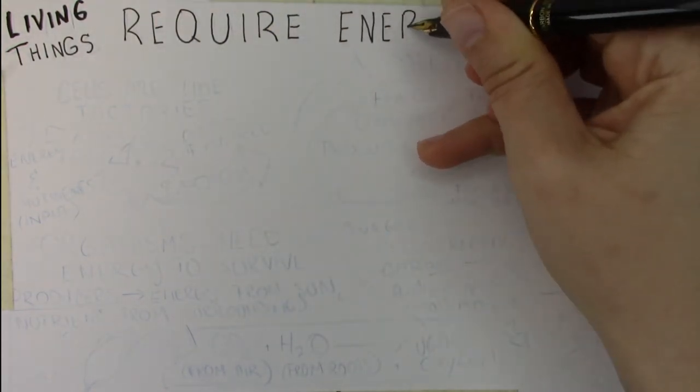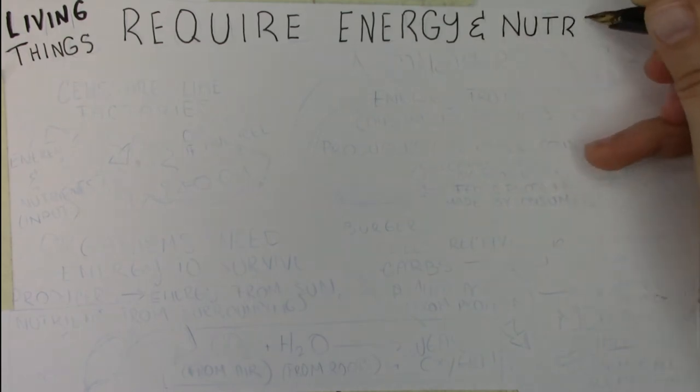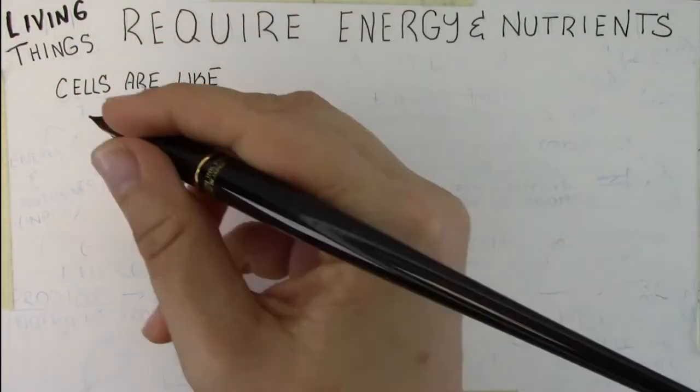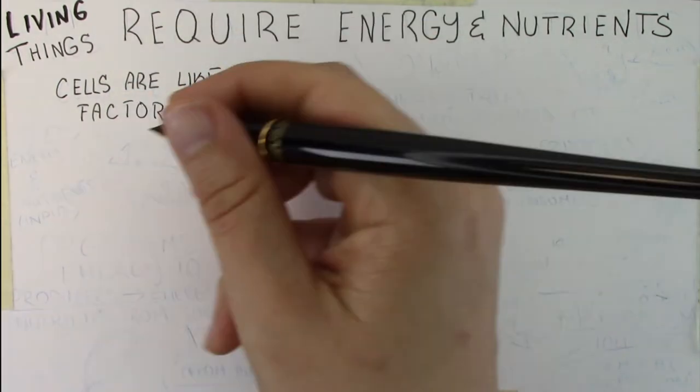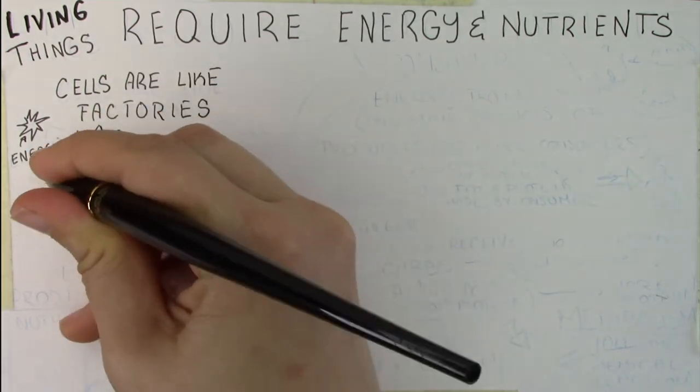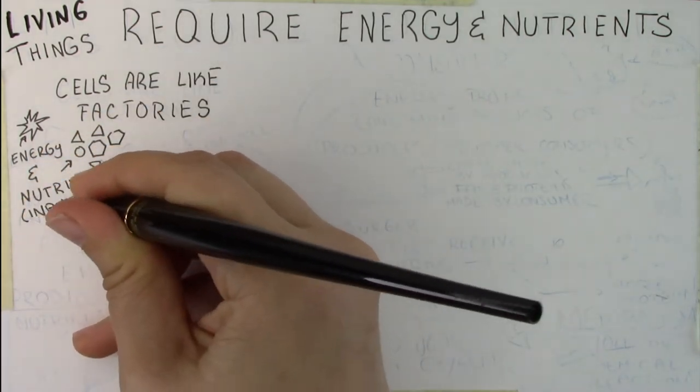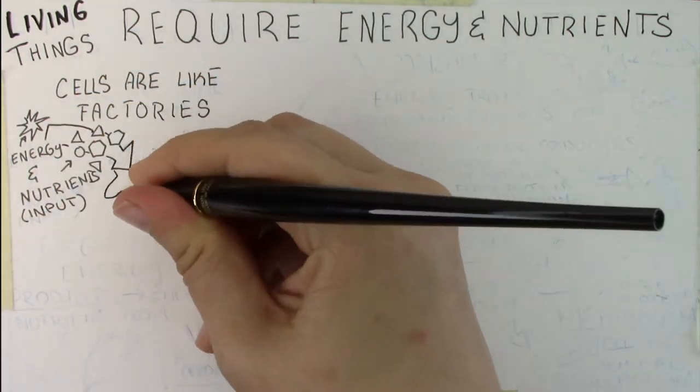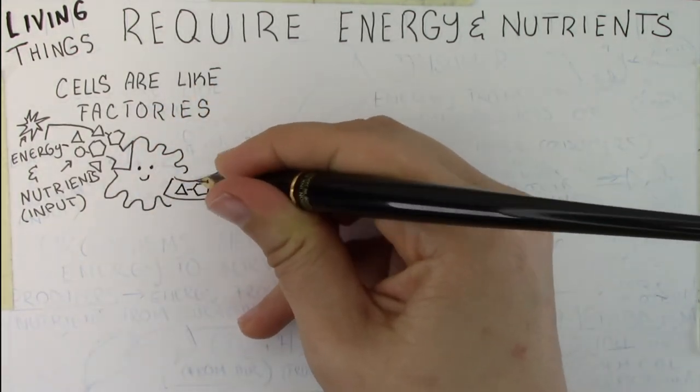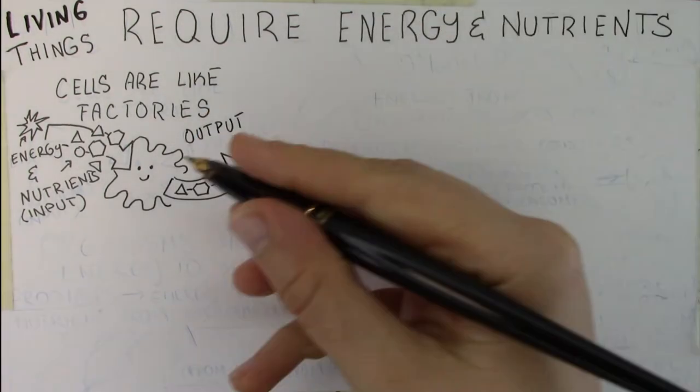This brings us to our second rule. Living things or organisms require energy and nutrients to survive. I really like to bring this back to the cellular level by reminding myself that a cell is essentially like a tiny factory. It's going to take in energy and nutrients as inputs and then use those inputs, reorganize them, and build products that if you're a multi-celled organism like yourself, are sent out of the cell and are required for you to survive.